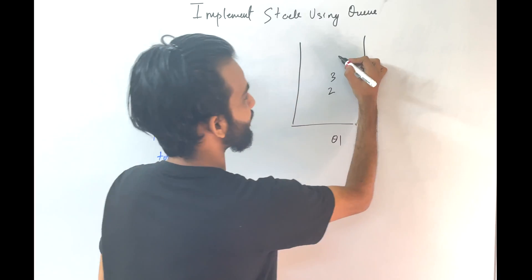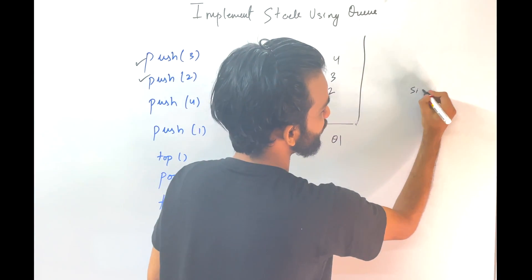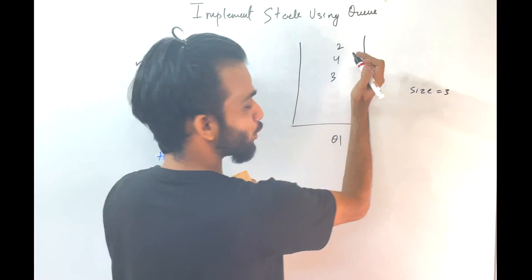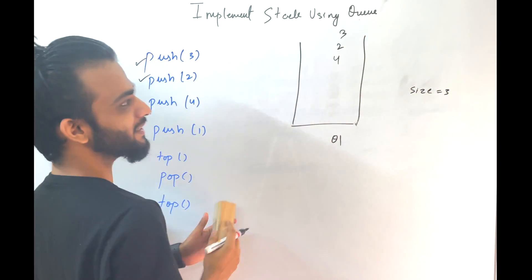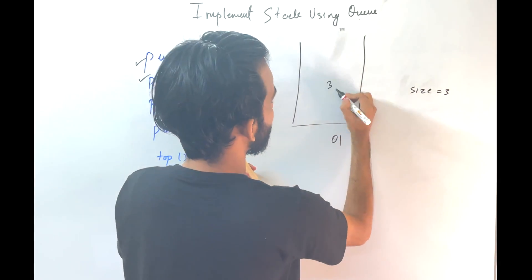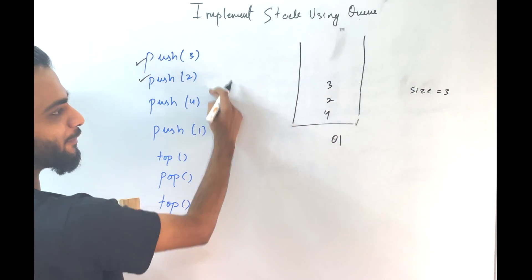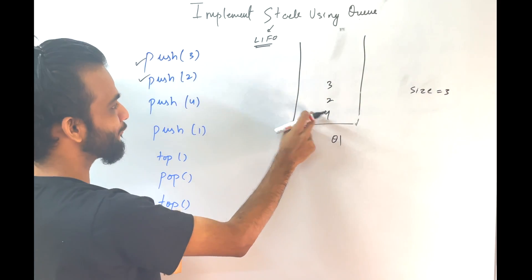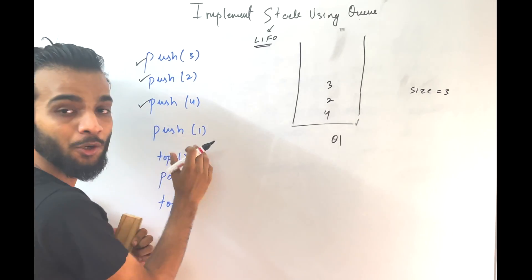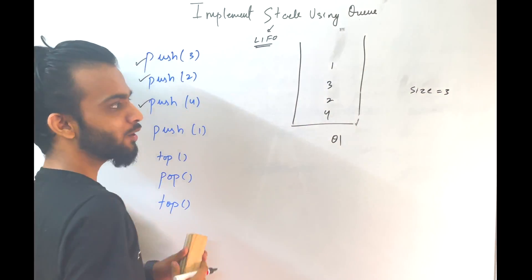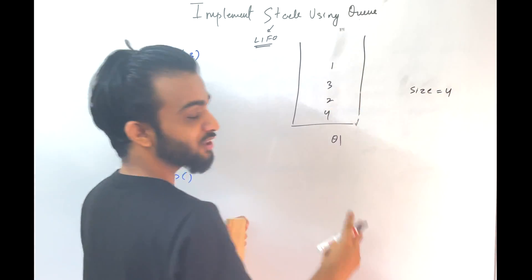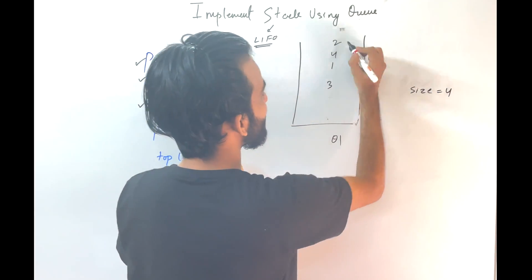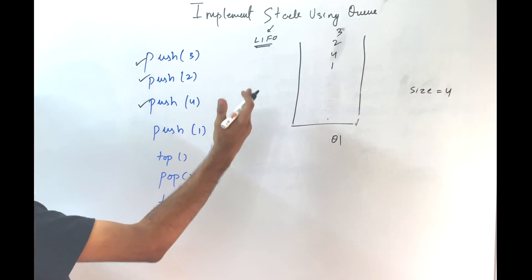Push of 4 — add 4. The size is 3, so take two elements: push the top element, then push the next one. Ultimately you'll have 3, 2, 4. Stack is last-in first-out, so if you do top, you get 4. Next, push of 1 — push 1. Size is 4, so take top 3 elements: 4 goes, 2 goes, 3 goes. You will have 1, 4, 2, 3.